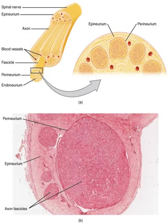But in simpler nervous systems, some or all neurons may be thus unique. In vertebrates, the best known identified neurons are the gigantic Mauthner cells of fish. Every fish has two Mauthner cells, located in the bottom part of the brainstem, one on the left side and one on the right. Each Mauthner cell has an axon that crosses over, innervating neurons at the same brain level and then traveling down through the spinal cord, making numerous connections as it goes.